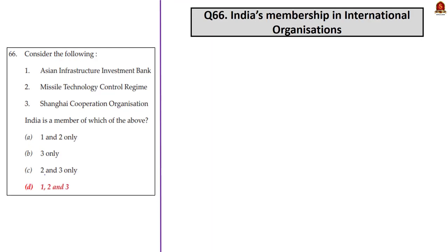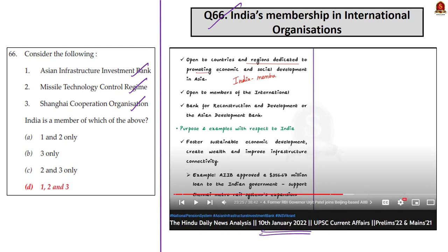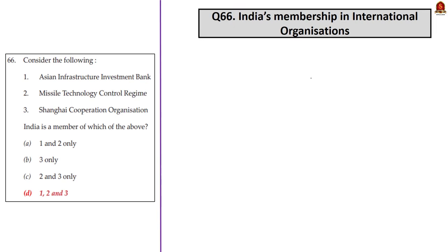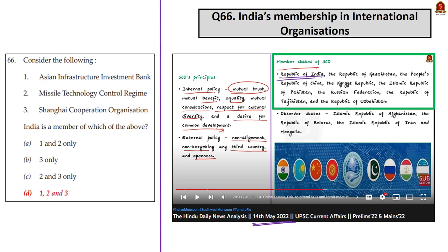Question 66 is regarding India's membership in various organizations: Asian Infrastructure Investment Bank (AIIB), Missile Technology Control Regime, and Shanghai Cooperation Organization (SCO). In our January 10th, 2022 analysis, we discussed that India is a member of AIIB. In our May 14th, 2022 analysis, we saw that India is a member of SCO as well. So from these two analyses, we can conclude that India is a member of both AIIB and SCO. Only option D has both statements 1 and 3 in it, so the correct answer is option D — 1, 2, and 3.